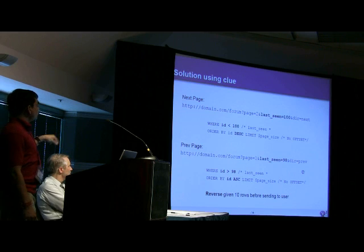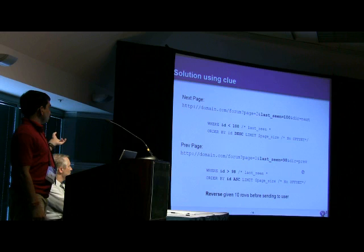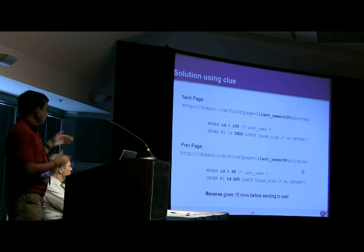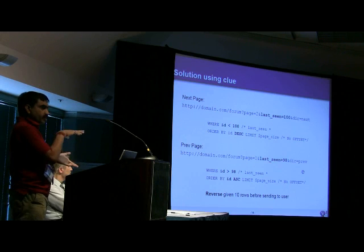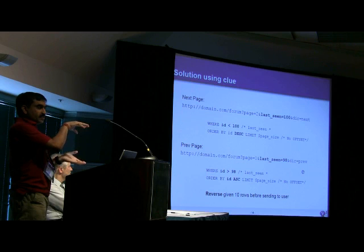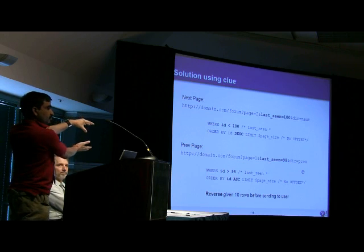Previous is a little bit tricky. On previous, you have to change your condition. You have to say ID is greater than 98. And you have to change the order as well. You have to say ID ascending. So that you can get the previous page. So once you get this data set, you have to reverse it and send it back to the user.